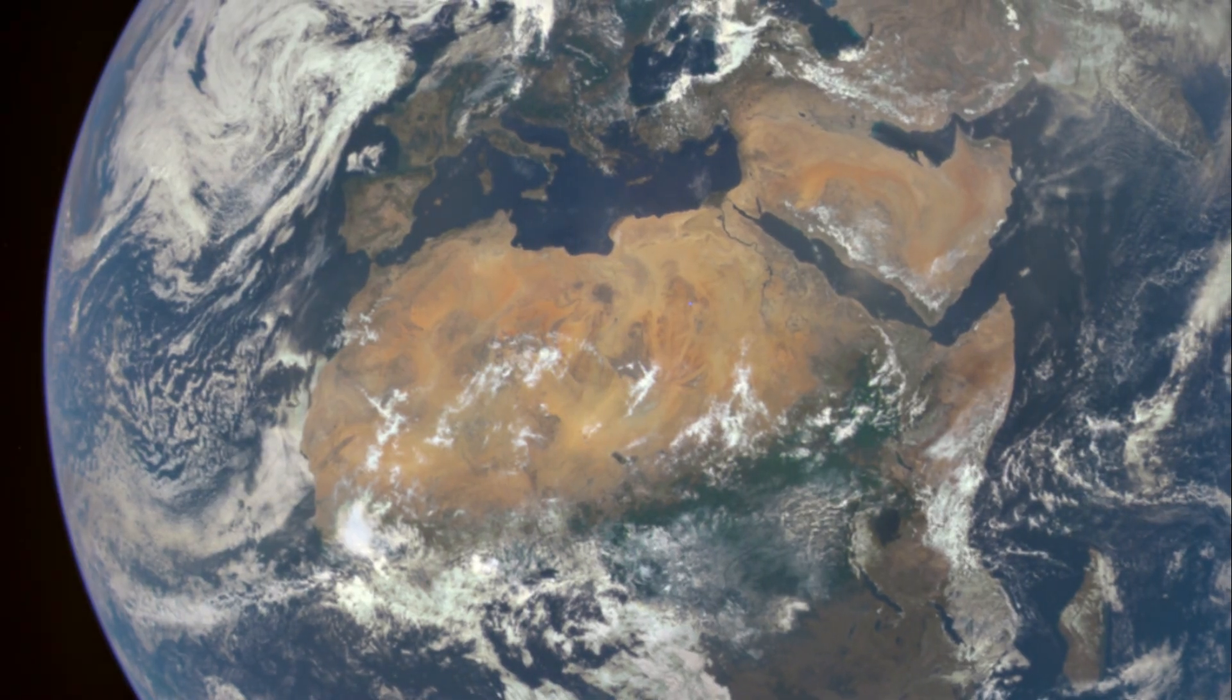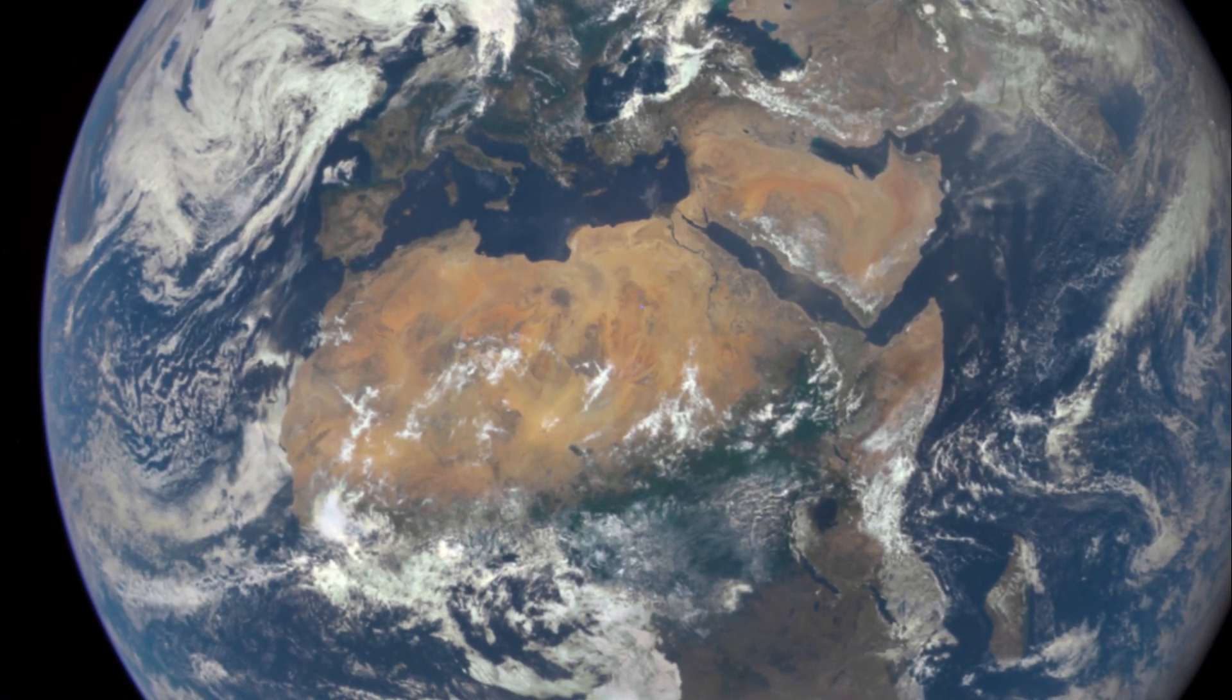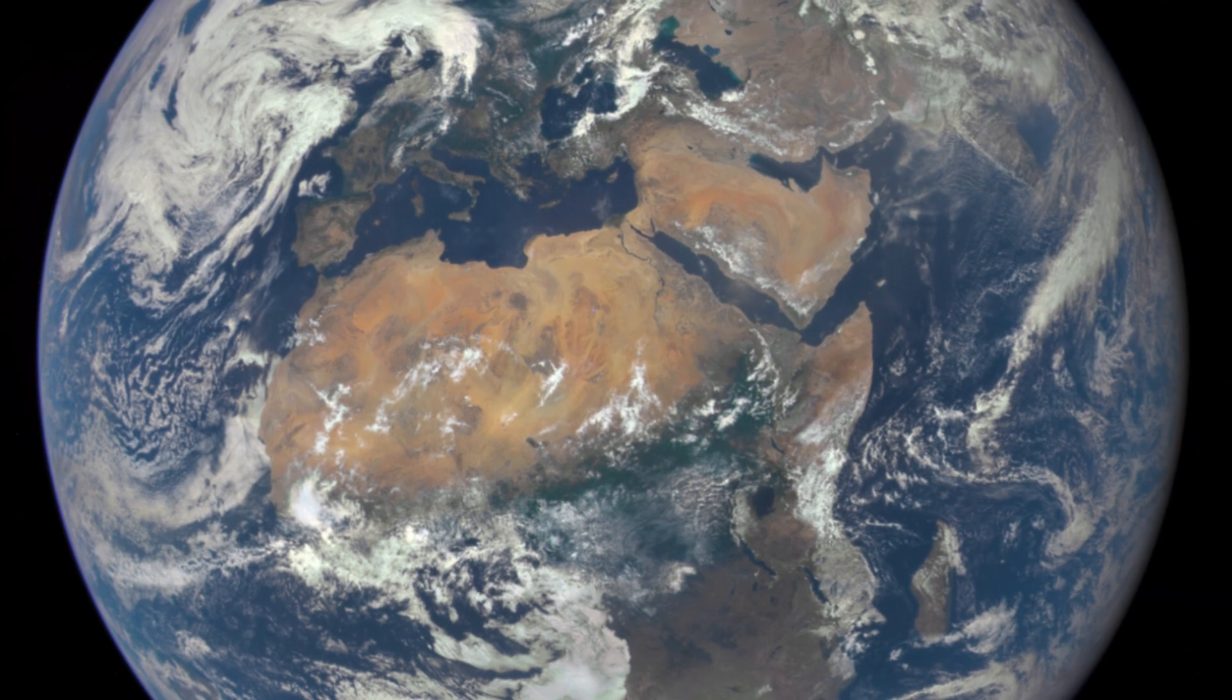Images of Earth from space offer undeniable evidence. Astronauts and satellites have given us stunning pictures of our planet, clearly showing its round shape.